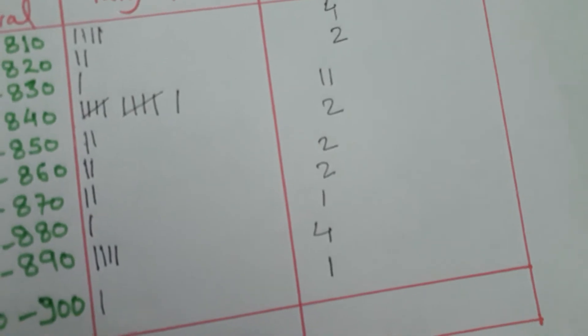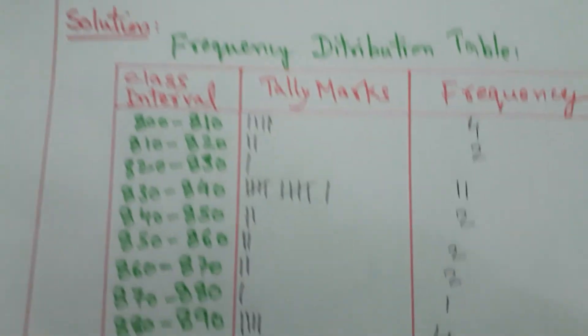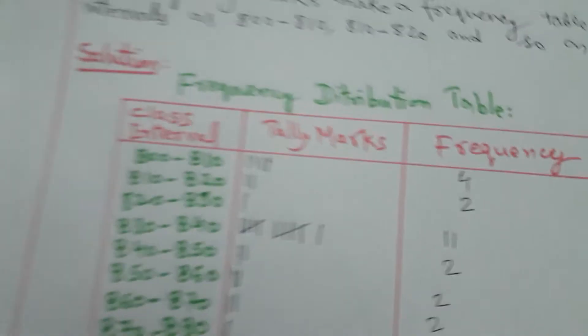So here you have a total. You must get the total thirty. So we are getting thirty, and this is your answer. This is how we prepare a tally mark.